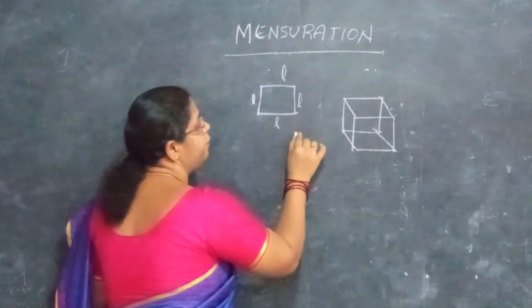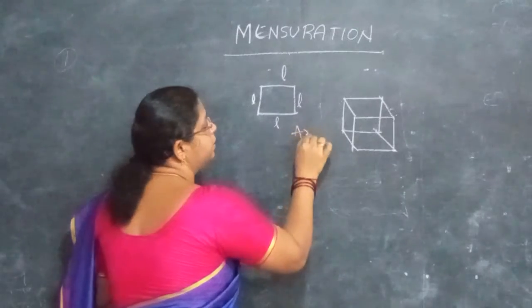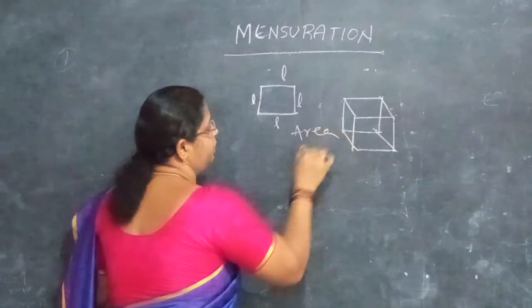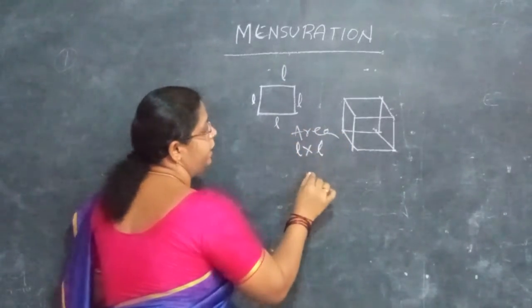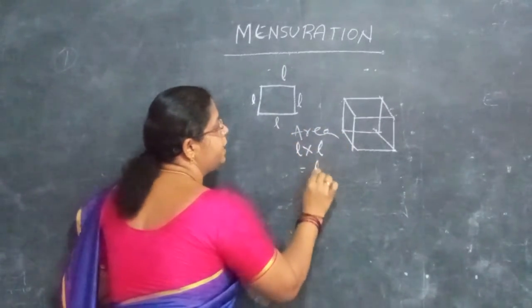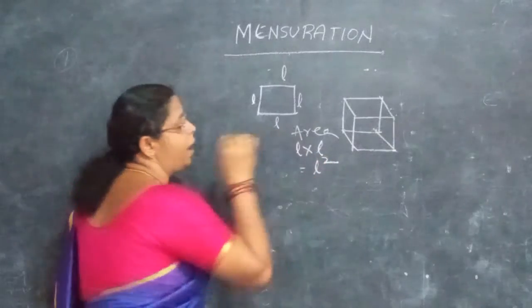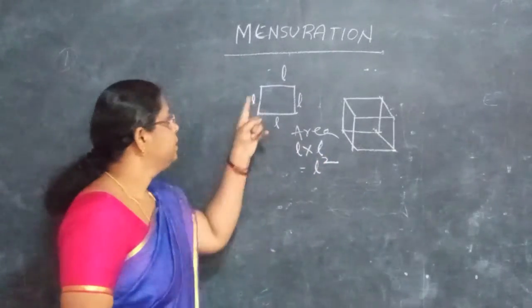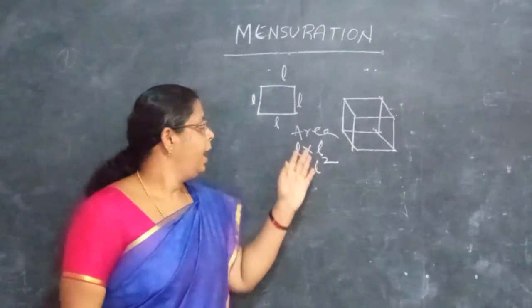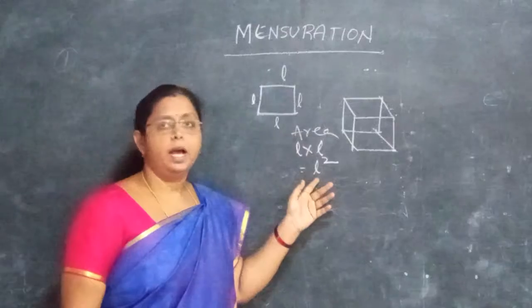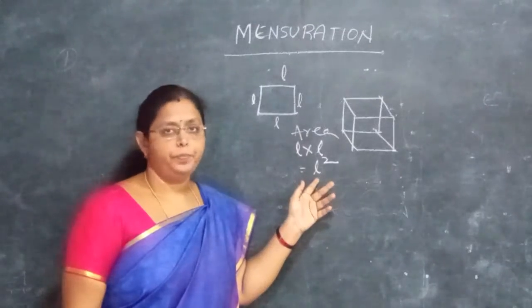The area formula: the square area is equal to L into L, which is L squared. Side into side gives us the area as L squared.